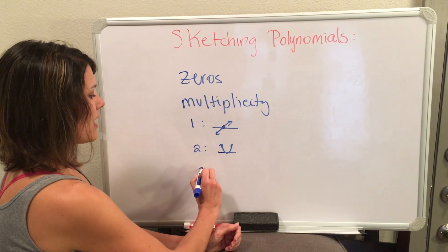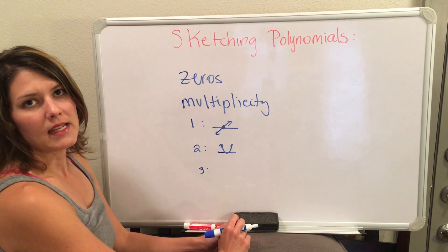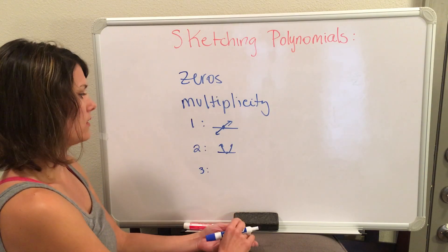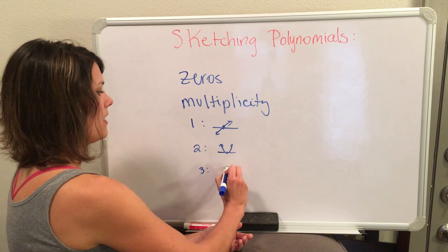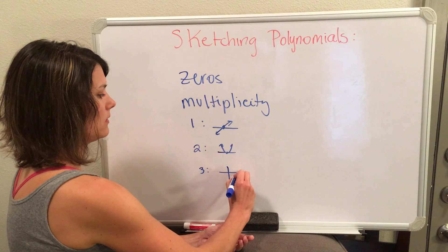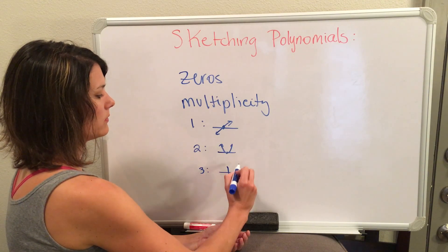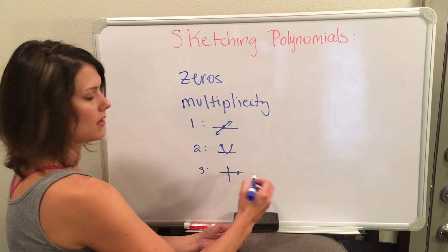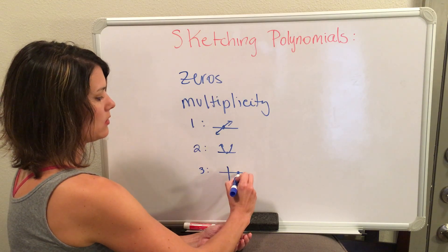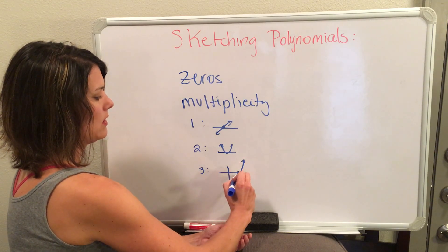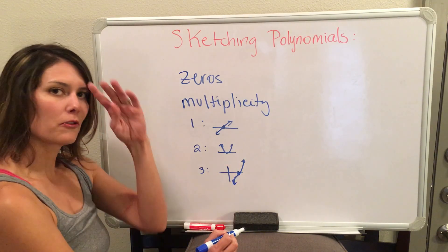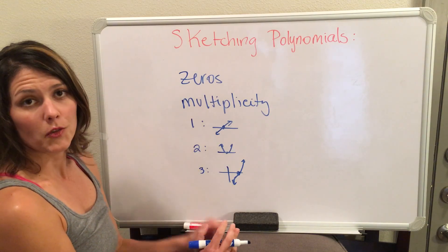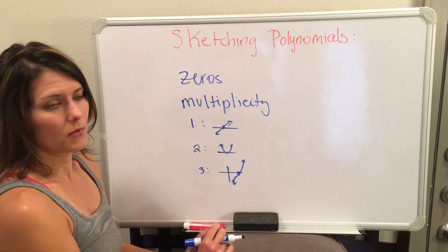The third type of multiplicity is three or a higher odd number — three, five, seven, and so forth. If you have a zero with this multiplicity, your polynomial will have a little wiggle. We could say it's changing concavity, so it will not go straight through the zero, but will curve through the zero point. Those are the three things you need to know before you can sketch your polynomial.